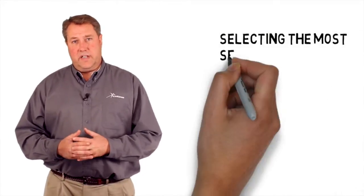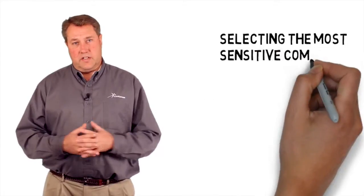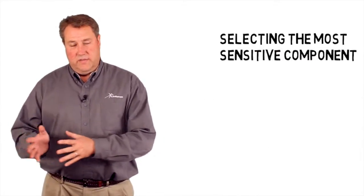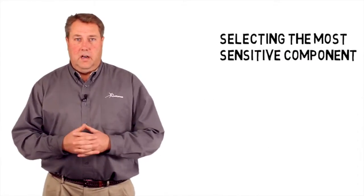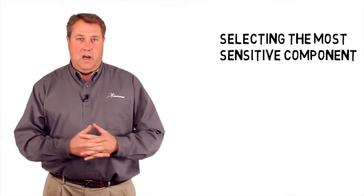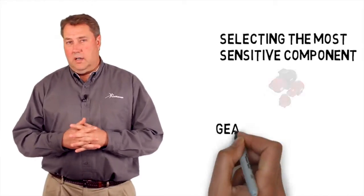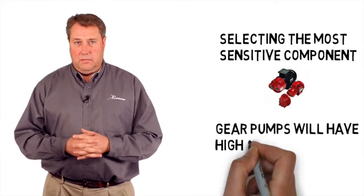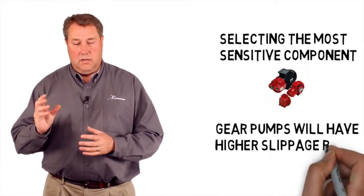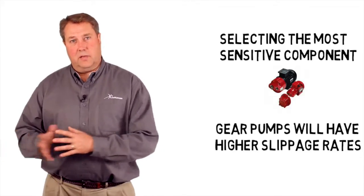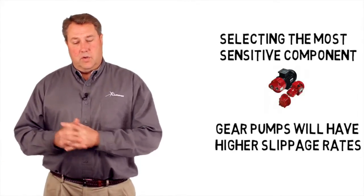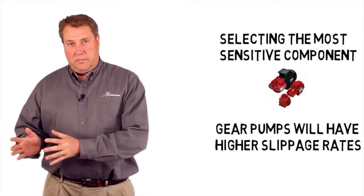How we define that is we take a look at the whole system and we pick the most sensitive component. A gear pump will have higher slippage rates and larger clearances than, say, a hydraulic proportional valve. So we would actually pick that proportional valve, take that most sensitive cleanliness code, and whatever that code is we assign to the whole system.